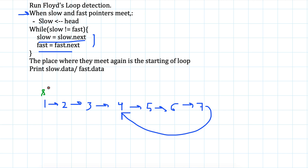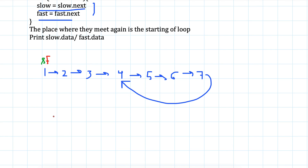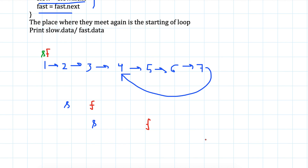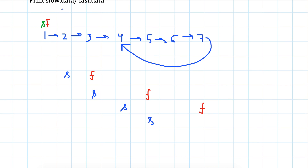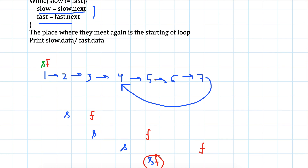Slow starts at head, fast starts at head. In the next step fast moves two nodes ahead and slow moves one. Then slow is at the third node, fast is at 5. Next step fast is at 7, slow is at 4. Then slow is at 5 and fast moves to 7, then again to 5. So slow and fast pointers meet here at node 5.